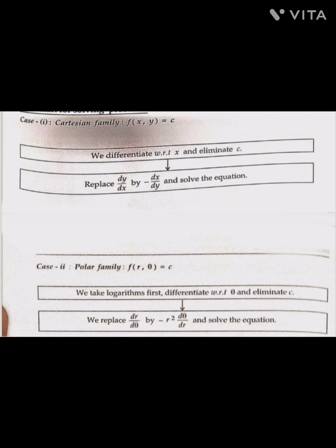Now for an example: find the orthogonal trajectories of the family of parabolas y² = 4x. Separating variables, we get y²/x = 4.